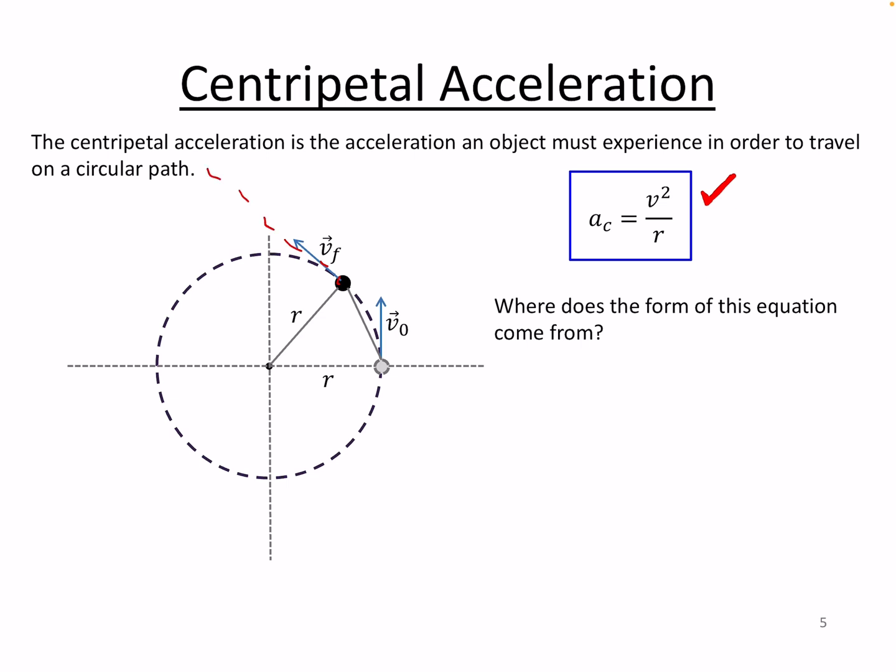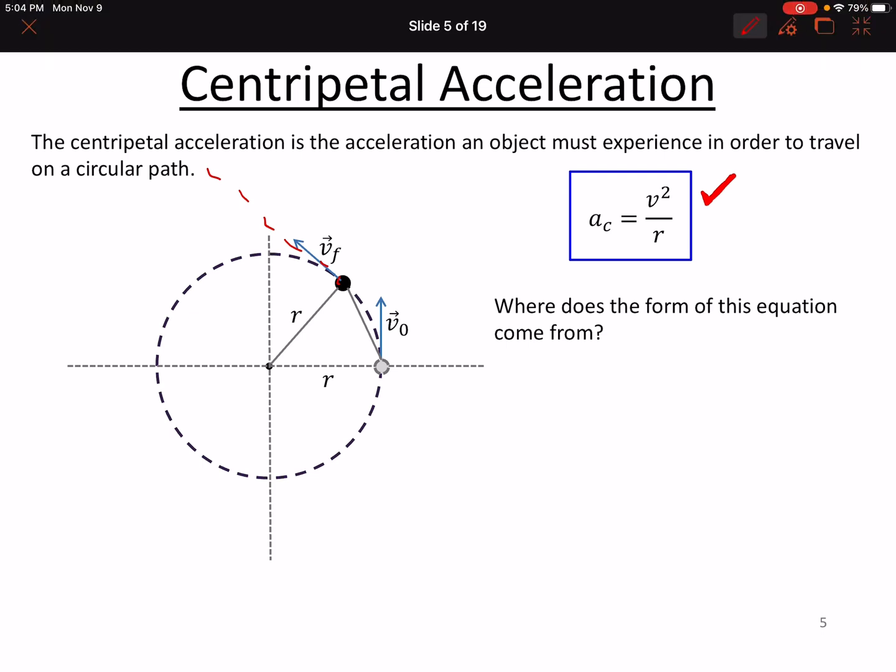So where does the form of this equation come from? And there's a lot of different arguments you can go to to look into this. However, I want to look at just this one. And then you can go searching around if this sort of proof of this equation doesn't work for you. So first thing we want to do is look at two moments, as we often do, on the circle.